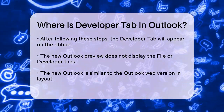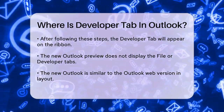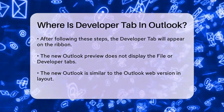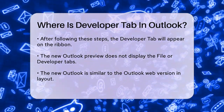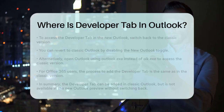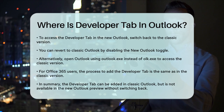For those using Office 365 or other versions of Outlook, the process to add the Developer tab remains the same as in the classic version. You go to File, Options, Customize Ribbon, select the Developer checkbox, and then click OK.